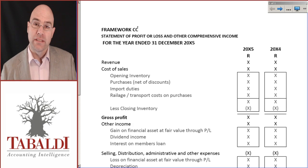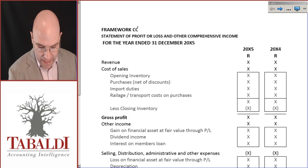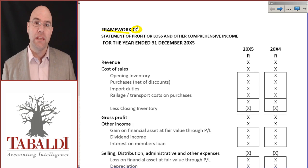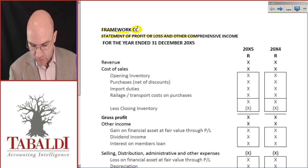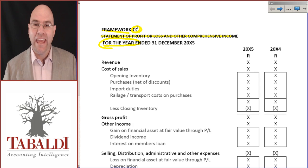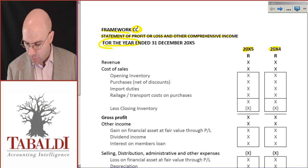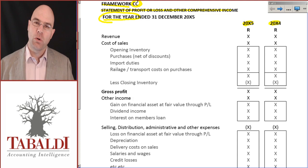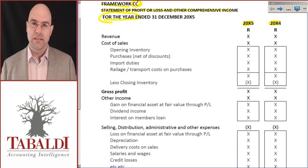Let's start off by looking at the statement of profit or loss for a CC. Remember we must name the business, and at the end of the name there must always be CC in terms of the applicable legislation. Then we give the heading: the statement of profit or loss and other comprehensive income, for the year ended 31st of December. We do the current year and prior year, and here I'm going to do the calculations required for FAC1601 on the face of the statement of profit or loss.